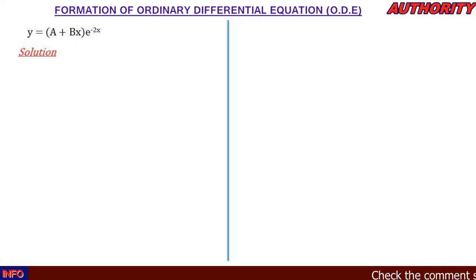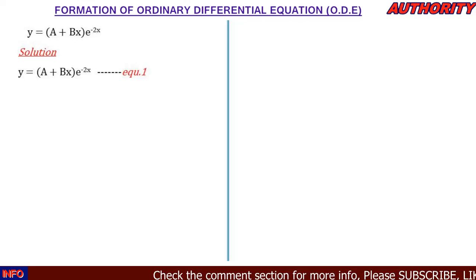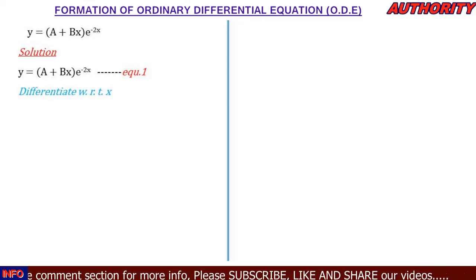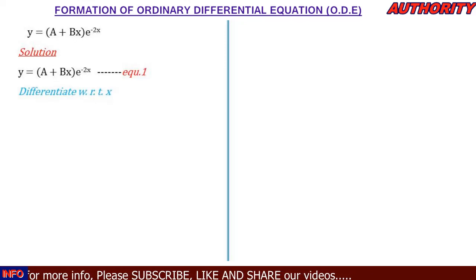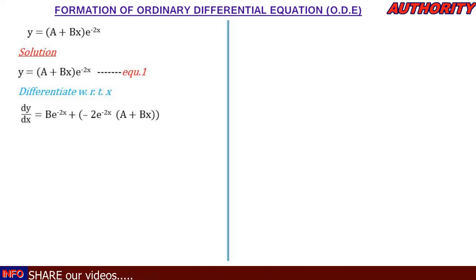Let's take a look at this problem. We have y = (a + bx)e^(-2x) — call this equation one. We are going to differentiate this with respect to x, and to do so we are going to use the product rule.